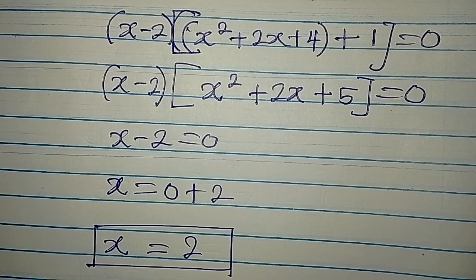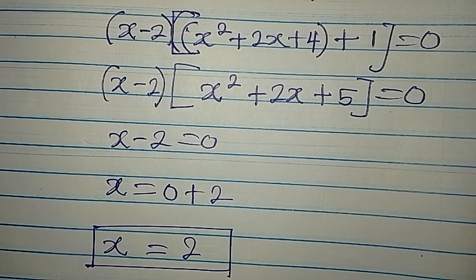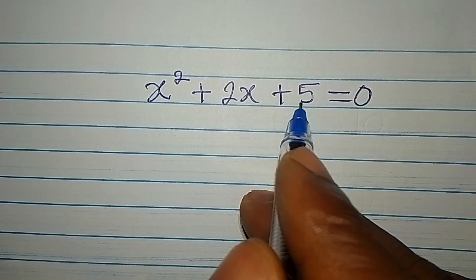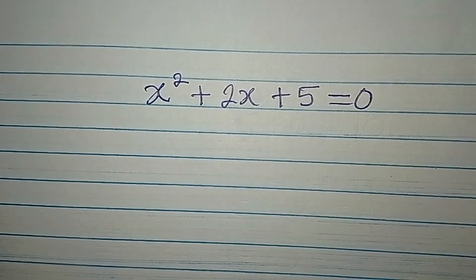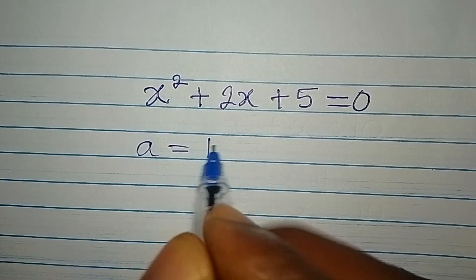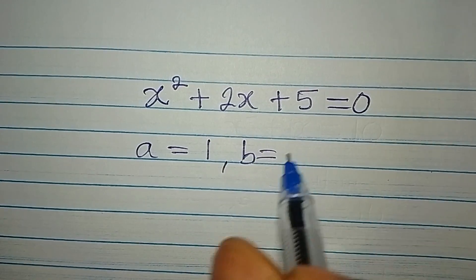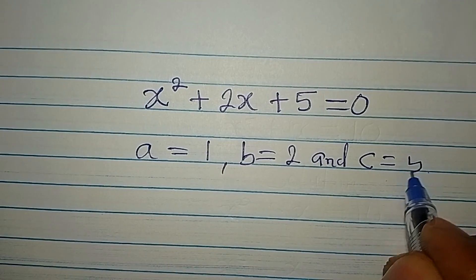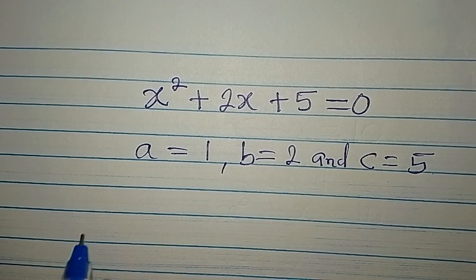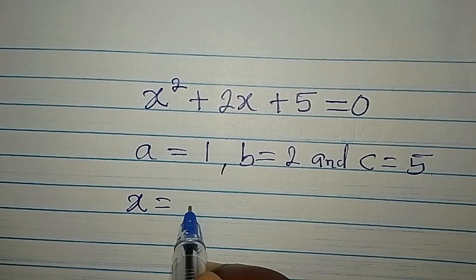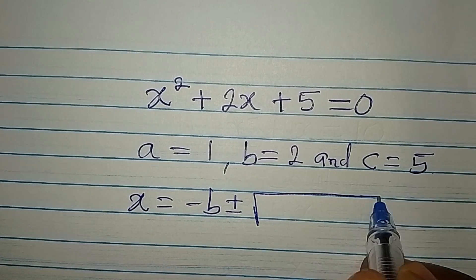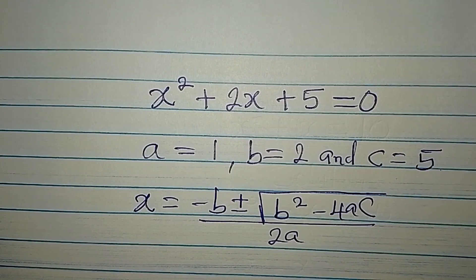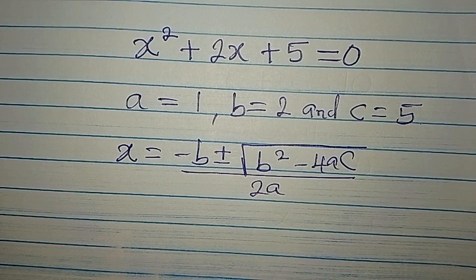From the quadratic equation we will be expecting two more solutions. So this is now a quadratic equation: x squared plus 2x plus 5 equals zero. The values are: a equals 1, b equals 2, and c equals 5, the constant. The formula we are going to use is x equals minus b plus or minus square root of b squared minus 4ac, all over 2a.